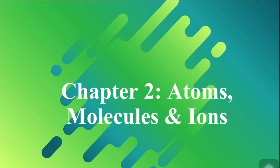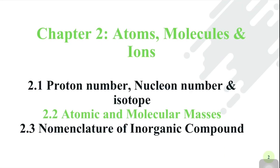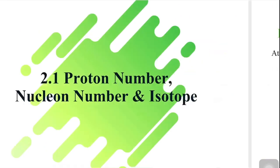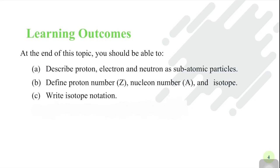Today we're going to learn Chapter 2: Atoms, Molecules and Ions. These are the subtopics in this chapter and we're going to focus on 2.1 - Proton Number, Nucleon Number and Isotope.